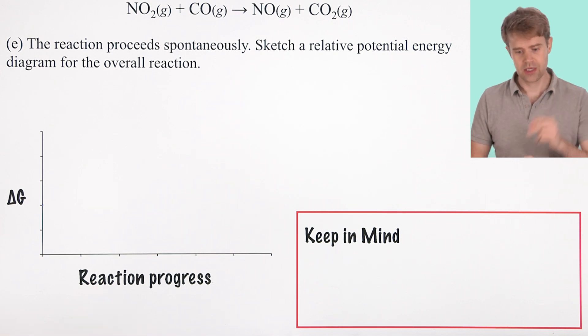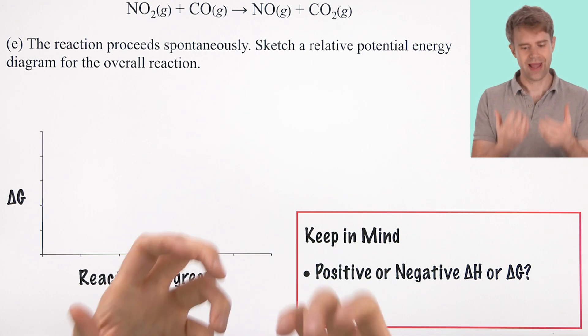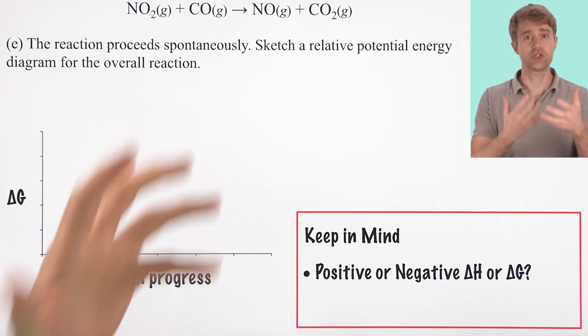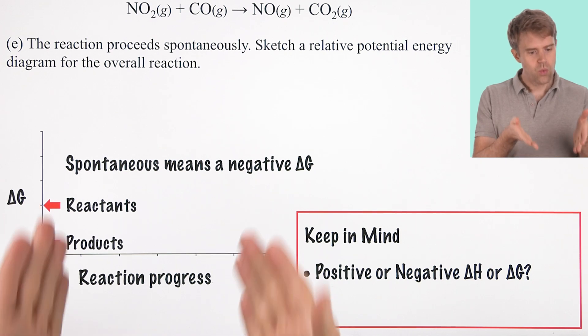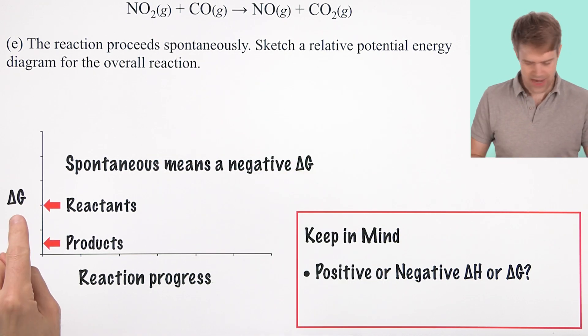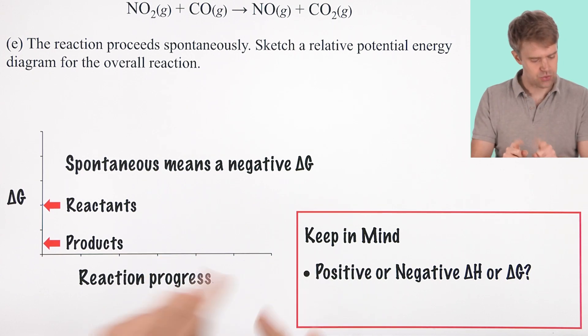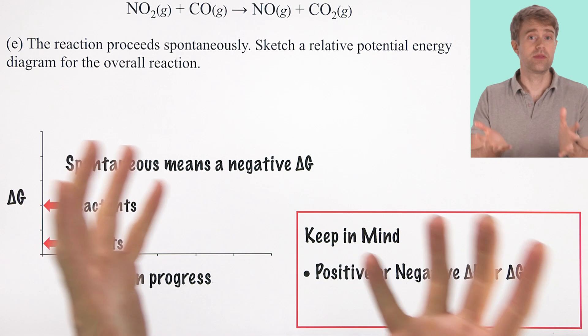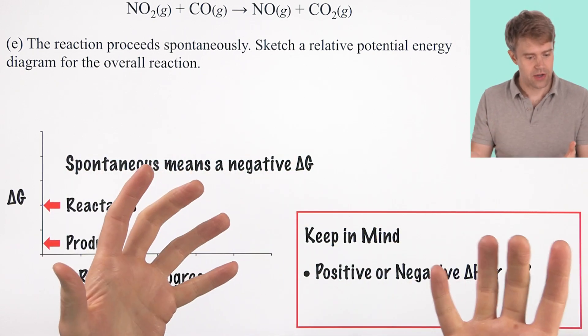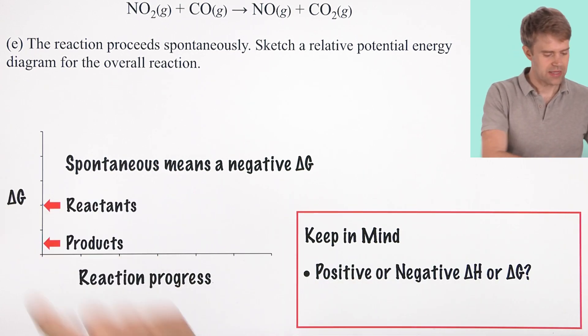There are two things to keep in mind when you're drawing energy diagrams. The first is you want to be sure to depict whether the reaction has a positive or negative change in energy. And this is usually represented by enthalpy, delta H, or Gibbs free energy, delta G. So for our problem, we know that the reaction is spontaneous. So it's going to have a negative delta G. That means that it loses energy. So the reactants, what we start with, are going to be higher on the y-axis than the products. Now sometimes the AP exam asks about enthalpy instead, whether the reaction is exothermic or endothermic. It's the same basic idea. We're just talking about enthalpy or heat energy as opposed to delta G.